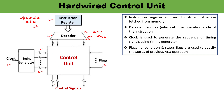The output of the control unit shows control signals C0, C1 up to Cn. A combination of control signals is generated, and depending upon the control signals, the function is carried out. In general, control signals are generated depending upon the inputs received from the instruction register, step counter, flags, and external inputs. That is how the control signal is generated.